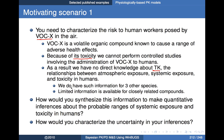We do have some information from experimental settings for three other species, and some limited human information — probably observational studies done in the workplace for a few related compounds that provide some information about components of the toxicokinetics. The question is: how would I use that kind of information? How would I synthesize or integrate it in order to make some quantitative inferences about the probable range of systemic exposure and toxicity in humans given different possible levels of workplace exposure?